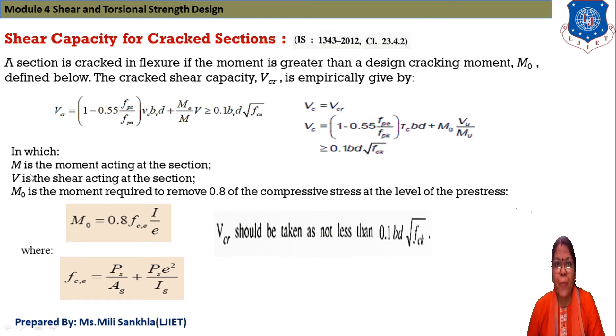One by one what is M? M is equal to moment acting at the section and V is equal to shear acting at the section. MO is equal to moment required to remove 0.8 of compressive stress at the level of prestress. And equation of this moment MO is equal to 0.8 FCE I divided by Y and VCR should not be less than 0.1 BV under root FCK.